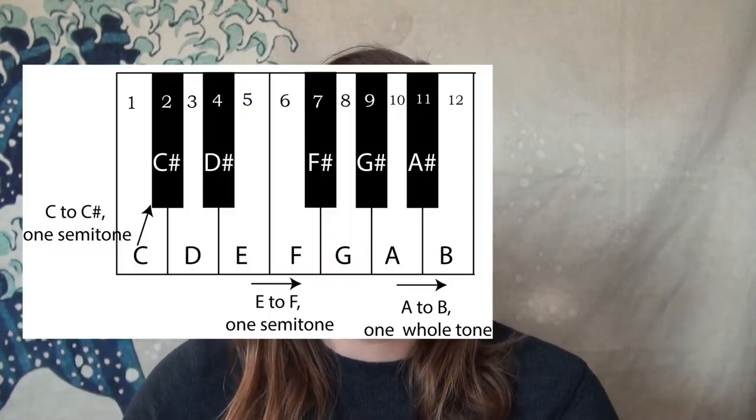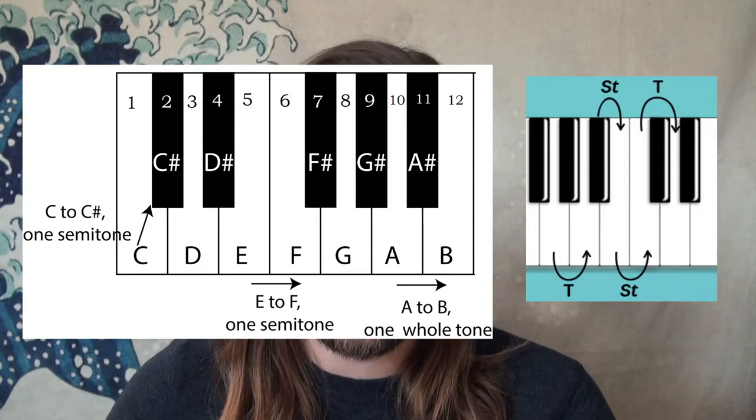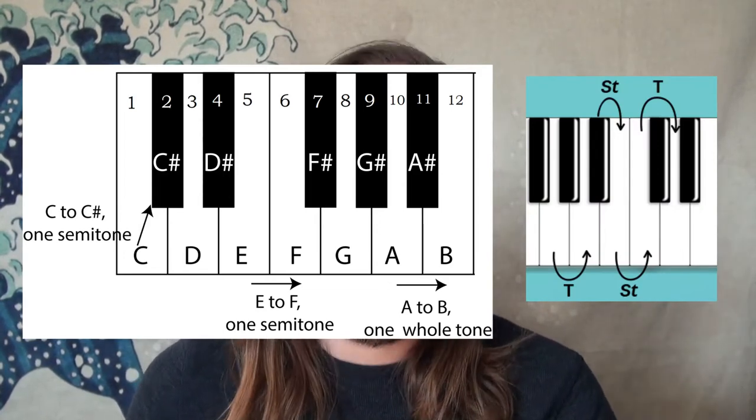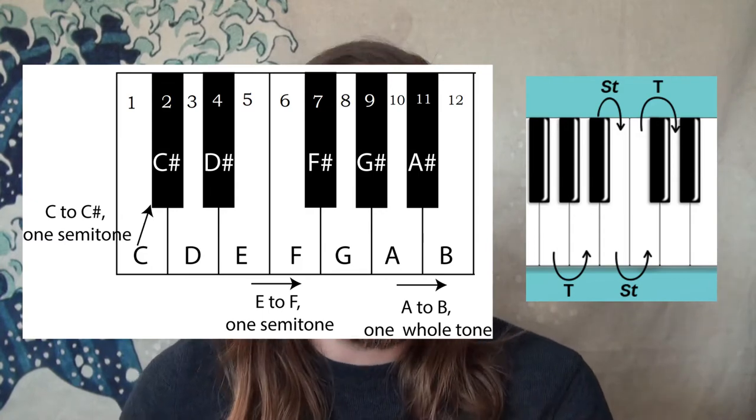Let's go back to the basics and learn these patterns in an easy and interesting fashion. The absolute first things we have to cover in understanding the foundations of melody in music production are: what a whole tone is, what a semitone is, what a whole step and a half step is, what notes are, what pitch and frequency are, and what a keynote and tonic note are.